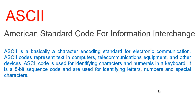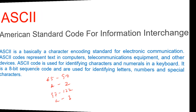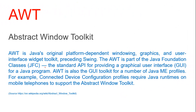In ASCII code, 65 to 90 represents capital A to capital Z, and 97 to 122 represents small a to small z. This is the ASCII code — American Standard Code for Information Interchange.